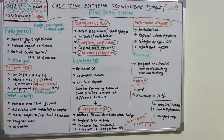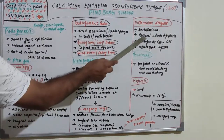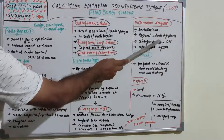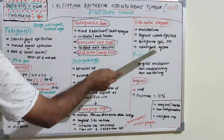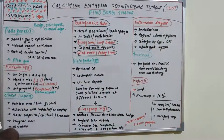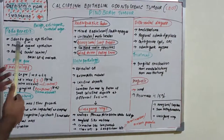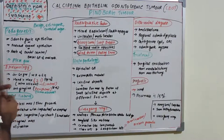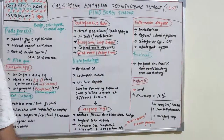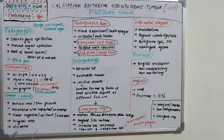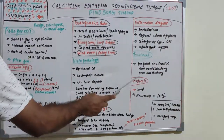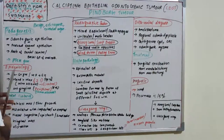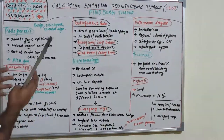The differential diagnoses for CEOT include ameloblastoma, regional odontodysplasia, dentigerous cyst, odontogenic keratocyst, and odontogenic myxoma. Treatment is basically surgical enucleation, and in severe widespread cases, hemimandiblectomy or hemimaxillectomy may be required. The overall prognosis is good, with a recurrence rate of around 15 percent.